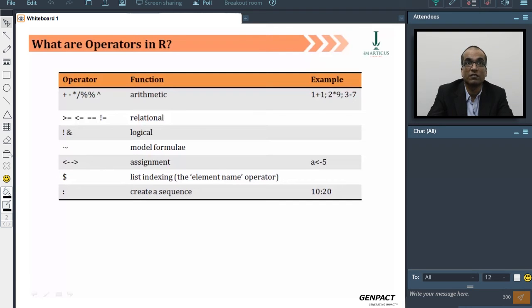Then the logical would be not, and. These would be the operators. Basically, you can use a double and also. That has some difference in the way in which it works. We'll get to see that when we actually work on these. Then for using an operator which signifies a model formula, we'll be using the tilde sign, which is in the extreme left of your keyboard.